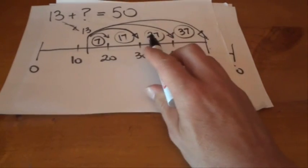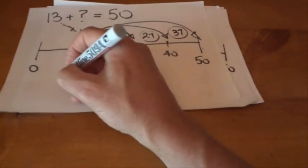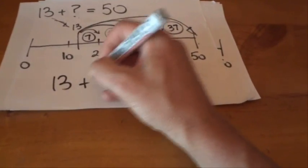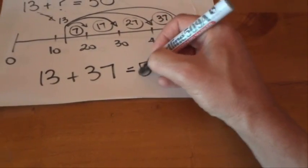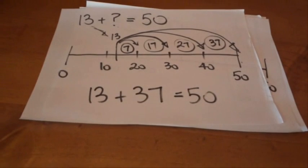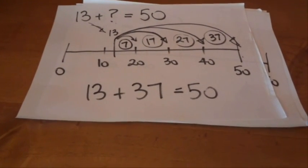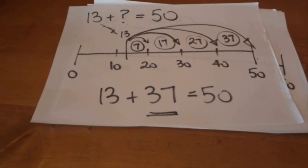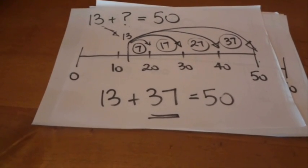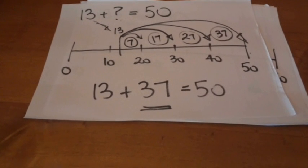Yep. Start off with 7, 17, 27, 37. So therefore, our answer: 13 plus 37 equals 50. We've solved that mathematical equation. The question mark is equal to 37.